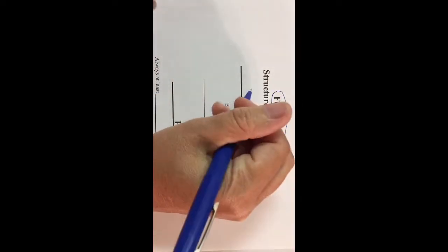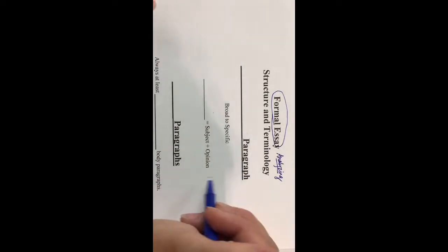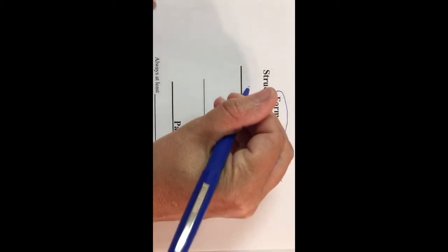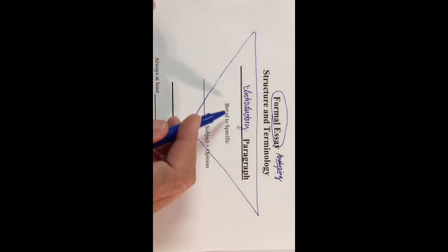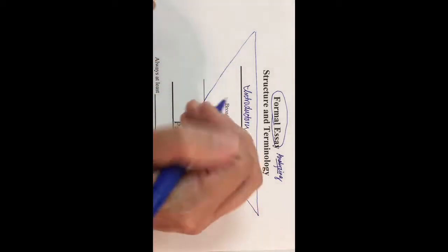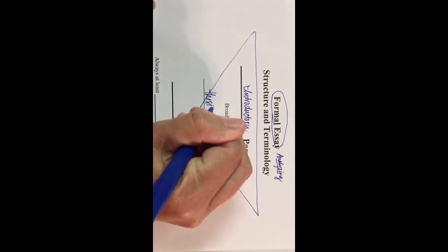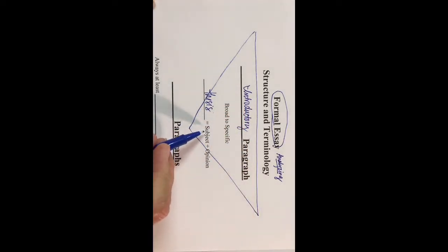The first part of essay structure is the intro paragraph—the introductory paragraph is always the first paragraph in a formal essay. It's shaped much like this, so just draw this inverted triangle. It goes from broad to specific and ends with the thesis.